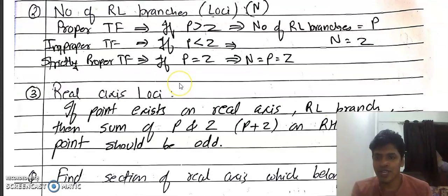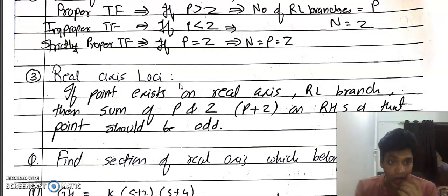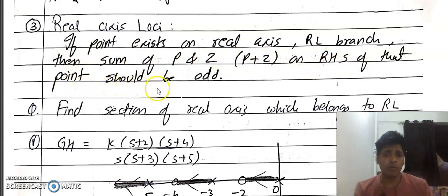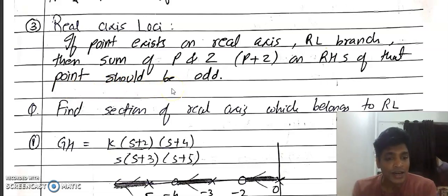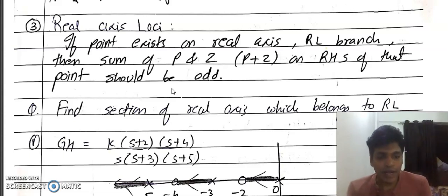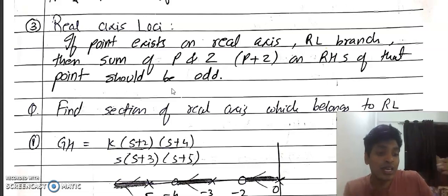The third rule is the real axis loci. If a point exists on the real axis, then the sum of poles and zeros on the right-hand side of that point should be odd. To check which portion of the x-axis lies on the root locus, simply count the total number of poles and zeros to the right: if the count is odd, the root locus lies there; if even, it does not.